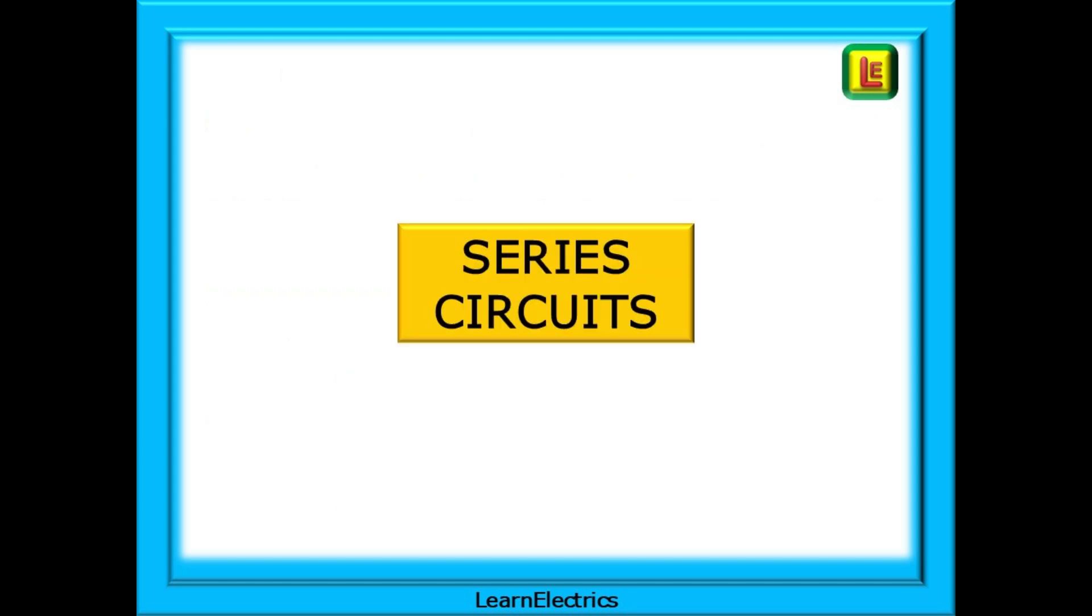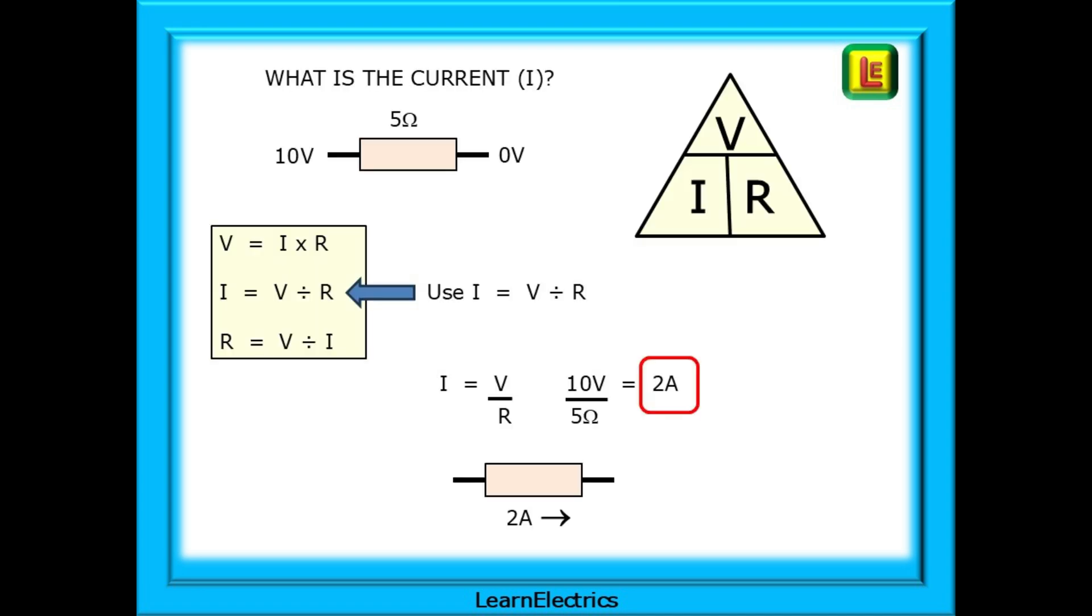We can look in more detail at series circuits now. If we begin with a single resistor, as shown, what is the current, or I? Looking at Ohm's law, we can see that the current is the voltage divided by the resistance. So 10 volts divided by 5 ohms is 2 amps.